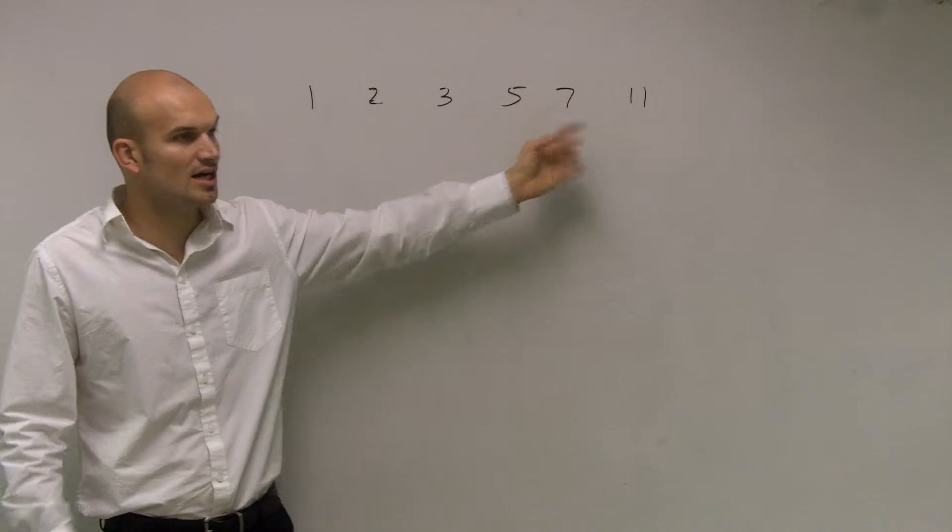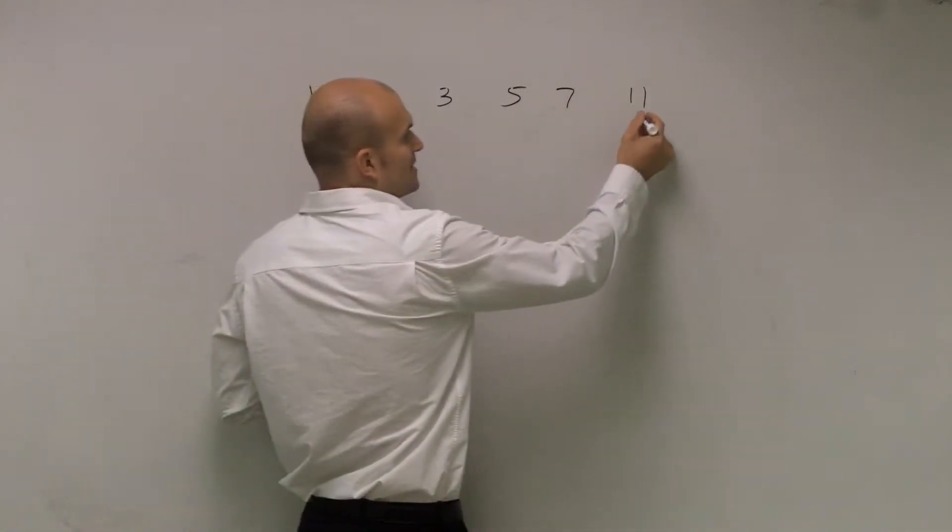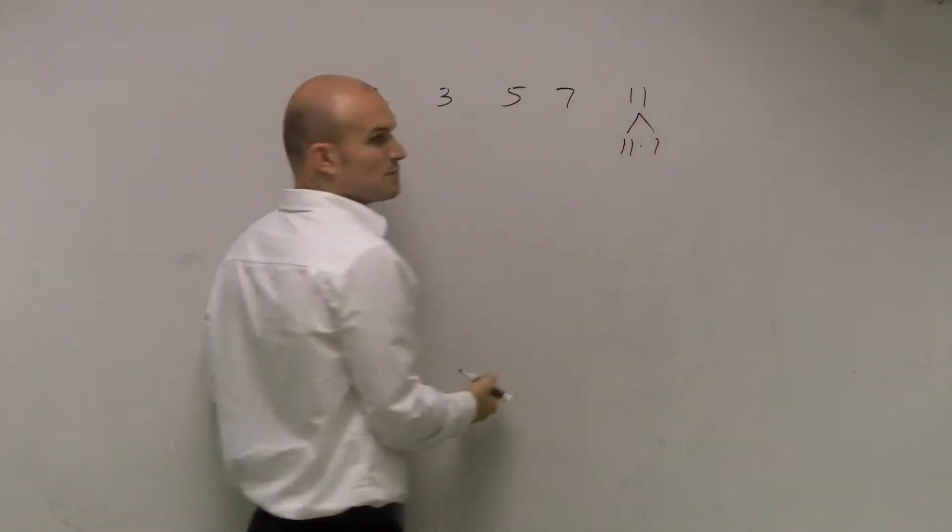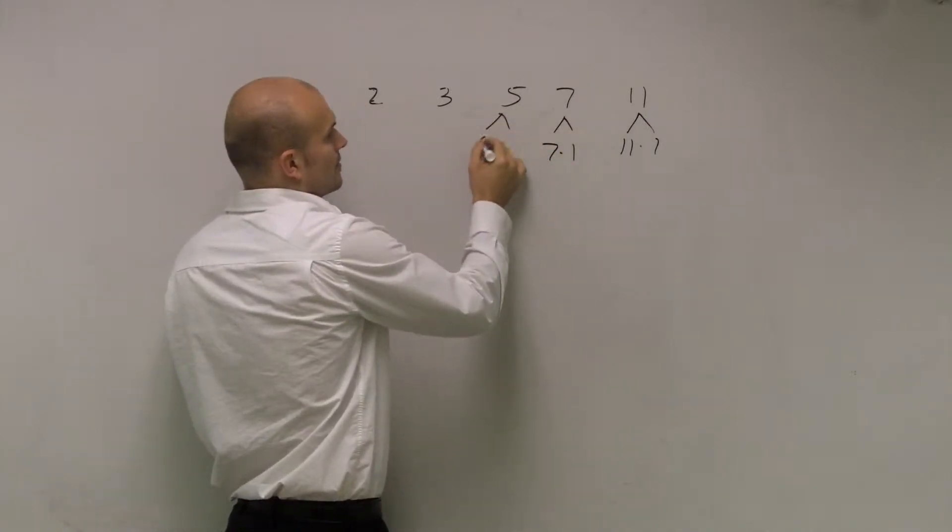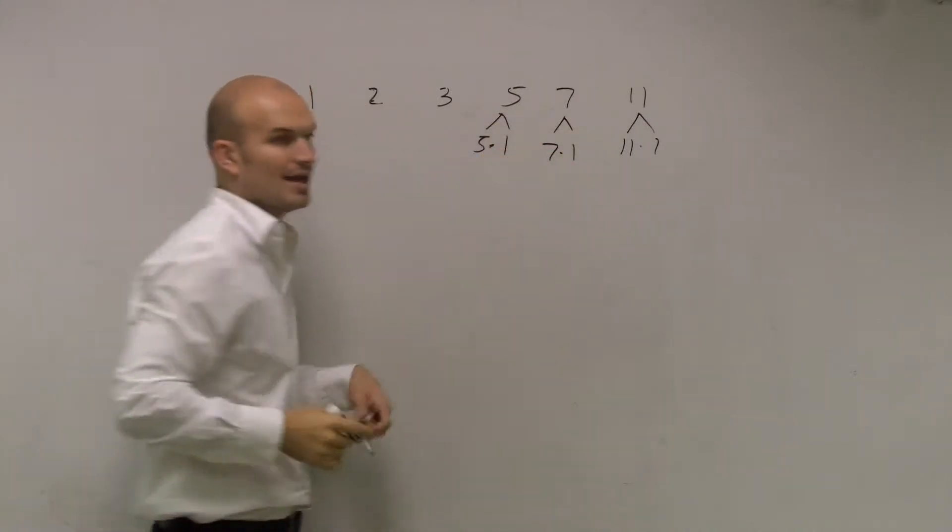the only numbers you can think of are, well, the only numbers that multiply to give me 11: 11 times 1. For 7: 7 times 1. For 5: 5 times 1, and so on.